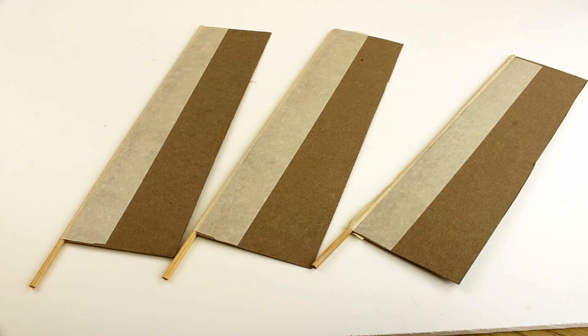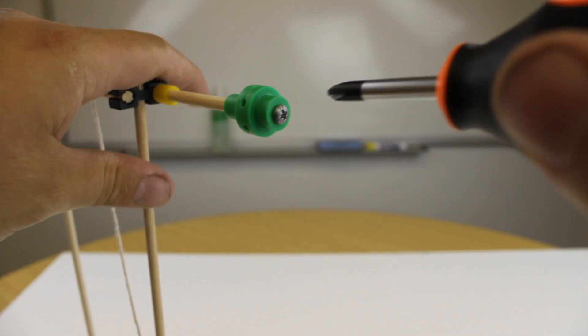Once you have all 3 blades made, it's time to insert them into the hub. Loosen the number 6 screw on your hub to allow room to put the blades in.